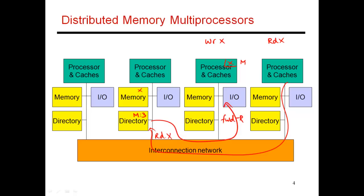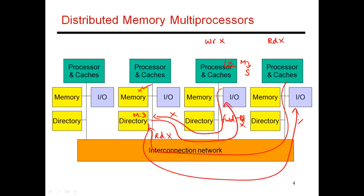This forward tells node 3 that somebody is trying to do a read of x. The cache copy has to be downgraded from modified to shared, and node 3 provides a copy of x back to the directory — this is when the write-back happens. Similar to the snooping-based protocol, every time a block goes from modified to shared, the memory copy is updated. The directory then sends a copy of x to the requestor, and x is placed in node 4's cache in shared state.